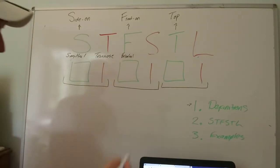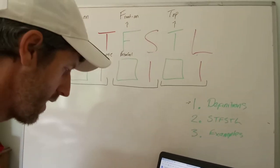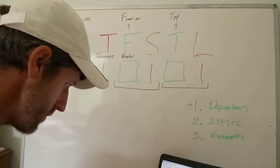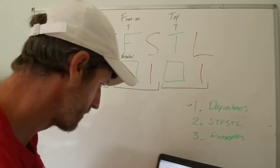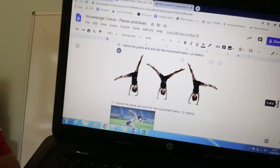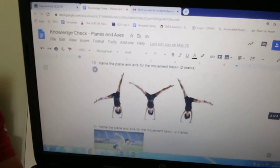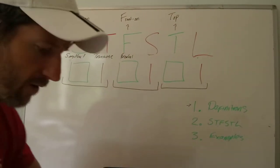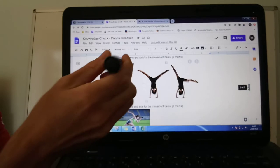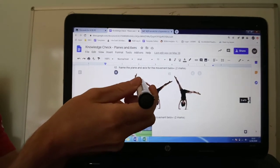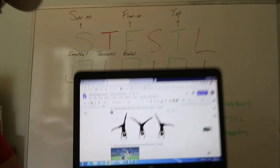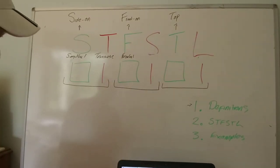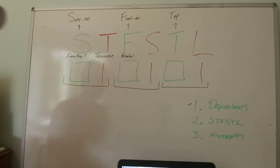In the frontal plane, you normally have movements happening — for example, the cartwheel. The axis for the cartwheel would be going from front to back, so that's an axis going through the body from front to back. That would be the sagittal axis.